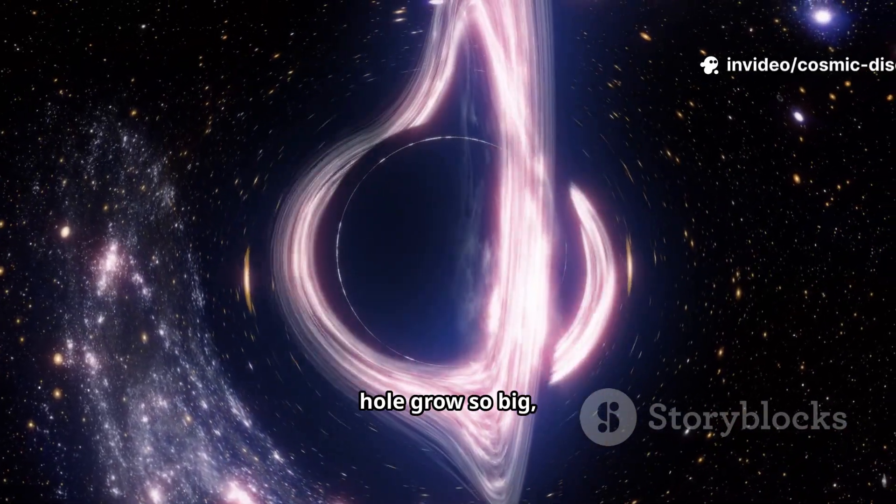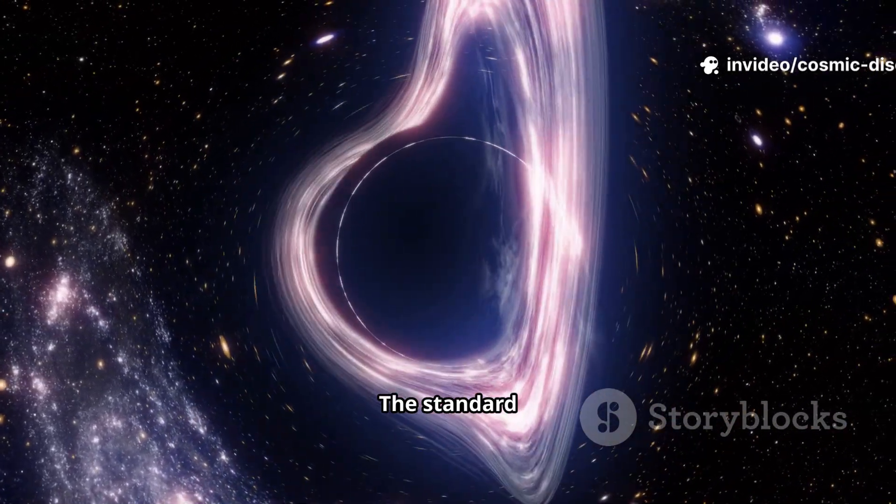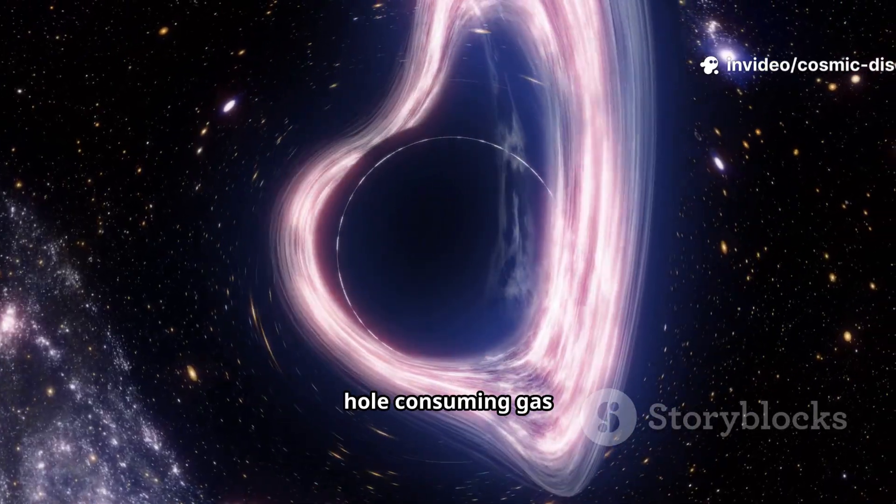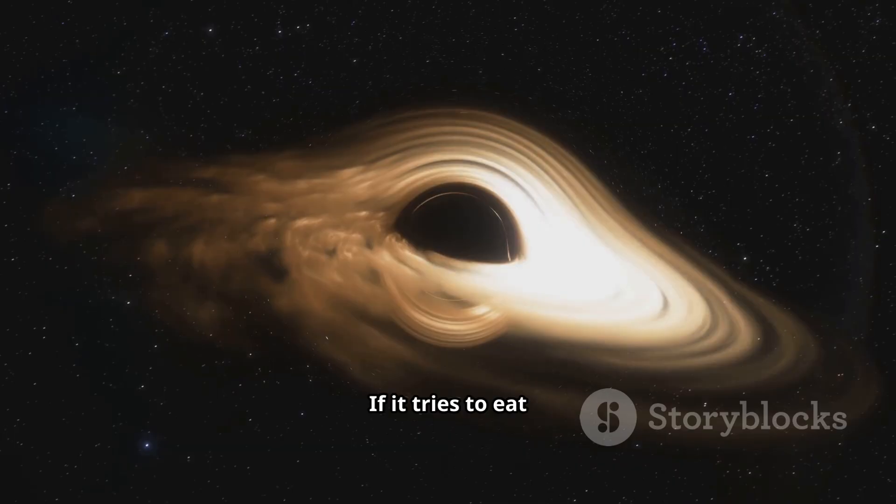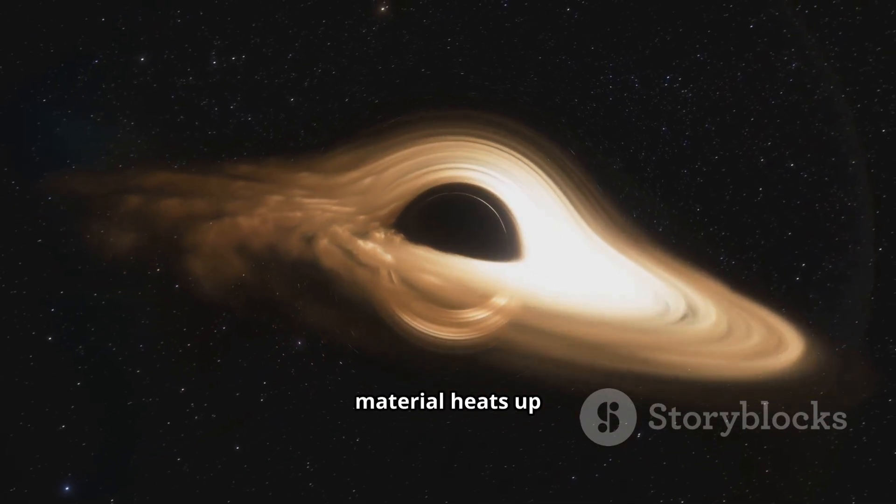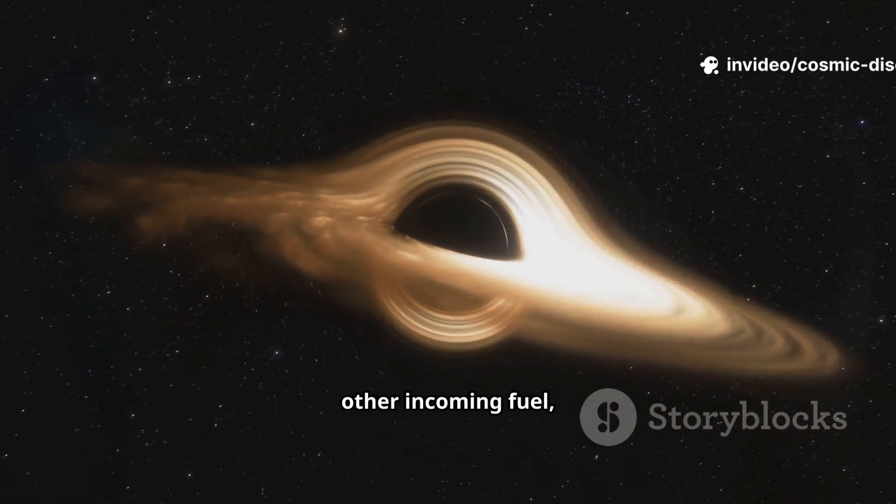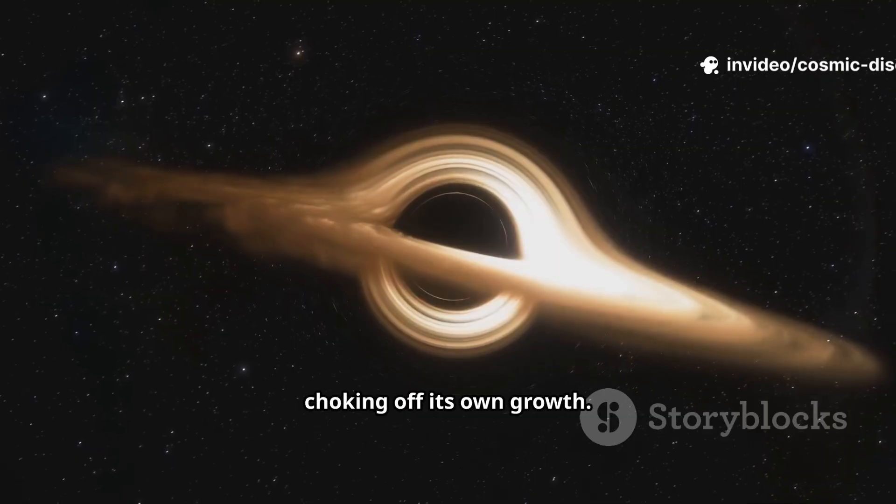How could a black hole grow so big so fast? The standard process of a black hole consuming gas and dust has a speed limit. If it tries to eat too quickly, the surrounding material heats up and pushes away other incoming fuel, choking off its own growth.